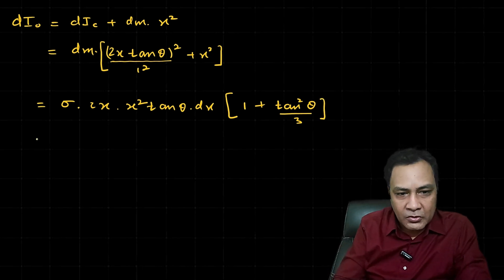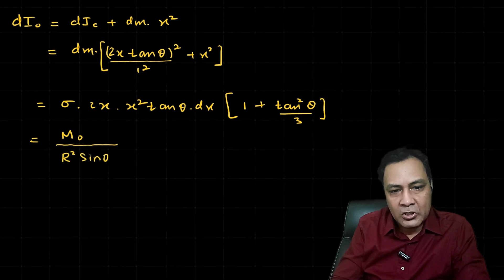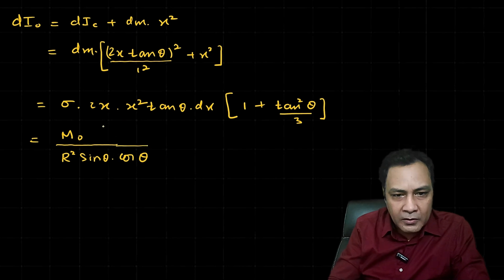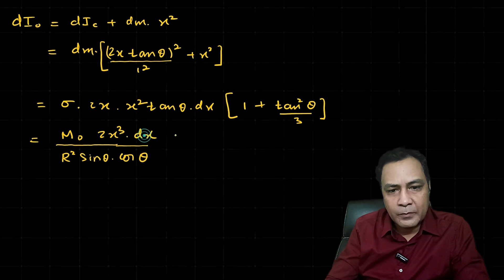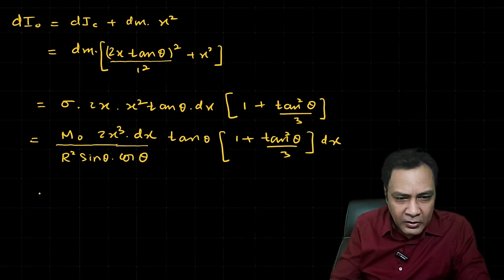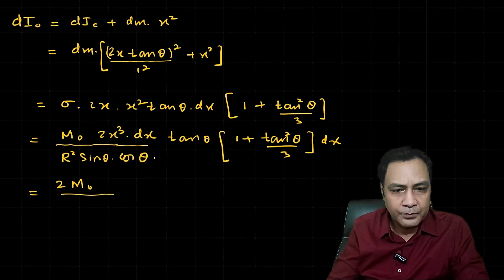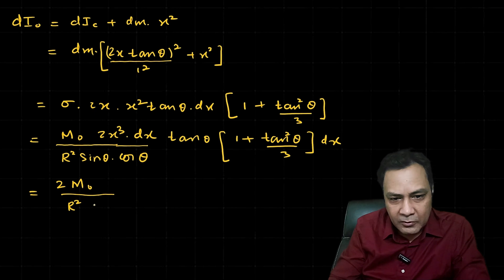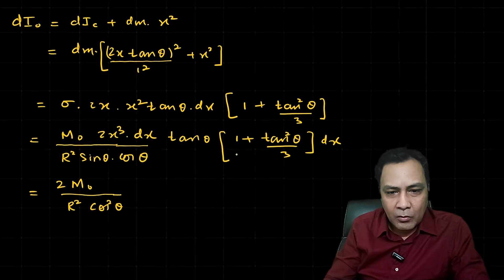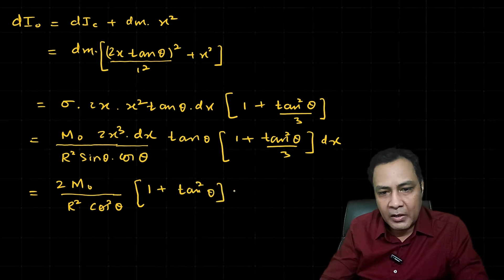Now substituting dm = σ × 2x tanθ dx, where σ = m0 / (r² sinθ cosθ), we get: dI_O = [m0 / (r² sinθ cosθ)] × 2x tanθ × (1 + tan²θ/3) × x² dx. Since tanθ = sinθ/cosθ, the sinθ cancels, leaving cos²θ in the denominator, giving dI_O = (2m0 / r²) × (1/cos²θ) × (1 + tan²θ/3) × x³ dx.